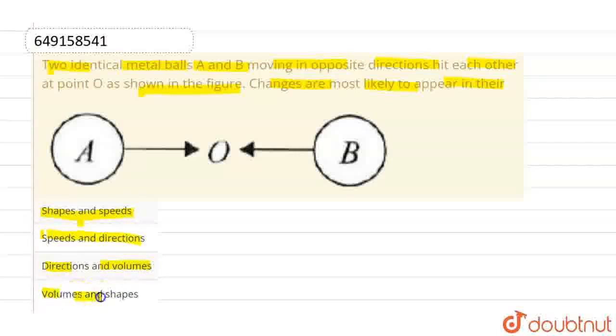So the last option is volume and shapes. Basically, what are these two metal balls? Suppose they have velocities V1 and V2 in opposite directions. Then at O they collide.